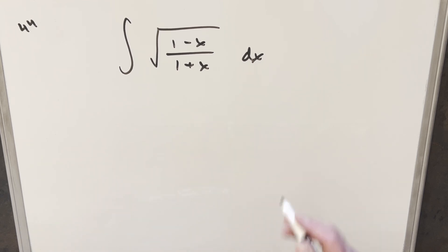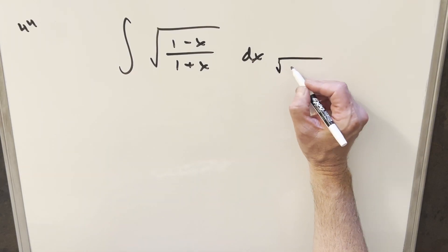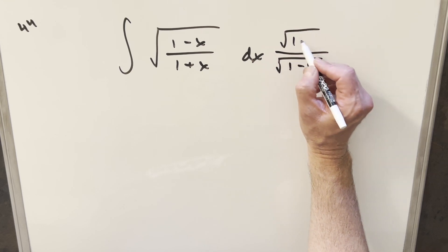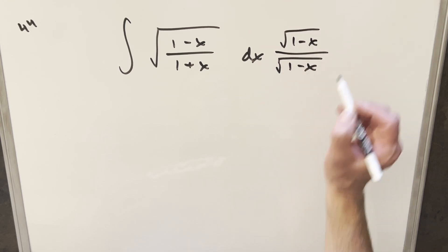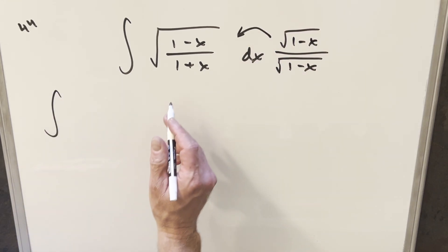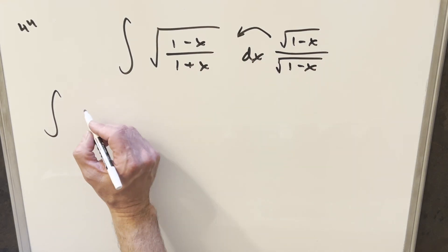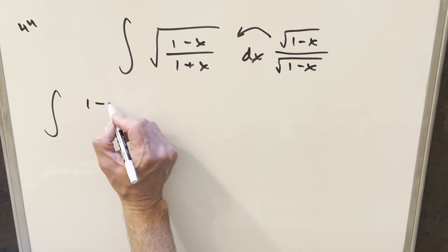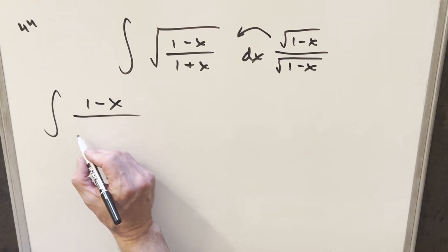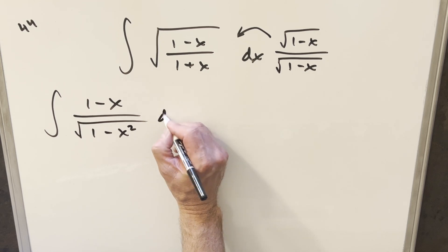To get started, I'm going to do the obvious thing and try to rationalize this denominator. What we'll do is multiply by square root of 1 minus x in the numerator as well. Multiplying that out, in the numerator we have 1 minus x squared inside the square root, so we can write that as 1 minus x. And in the denominator we end up with square root of 1 minus x squared dx.